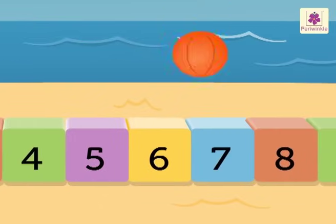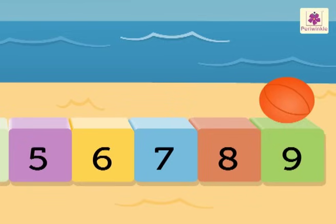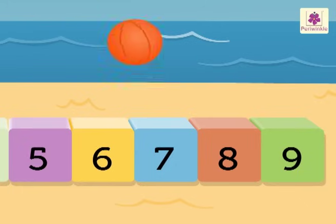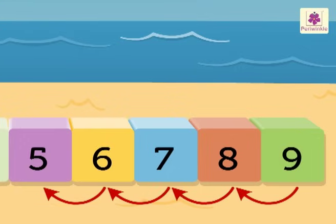Now look at the ball. It is on number 9. Now let us see the immediate four numbers that come before 9. They are 8, 7, 6, 5. The numbers that come before are always smaller than the given number.